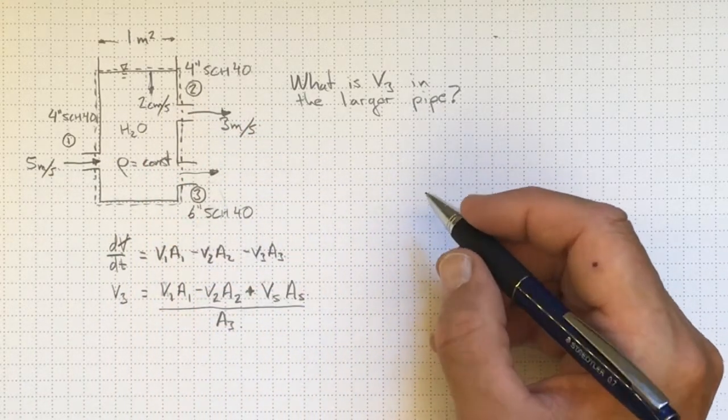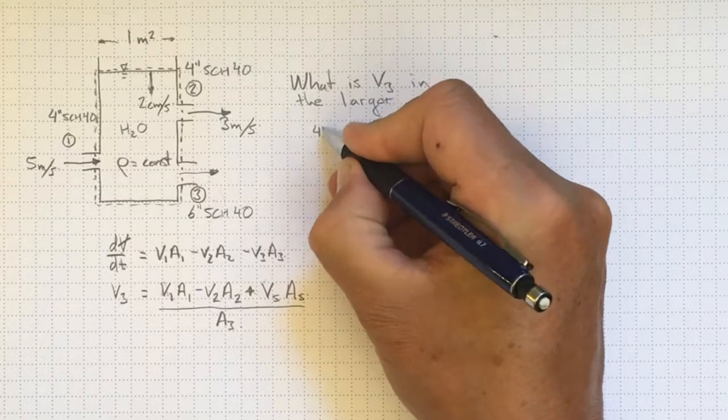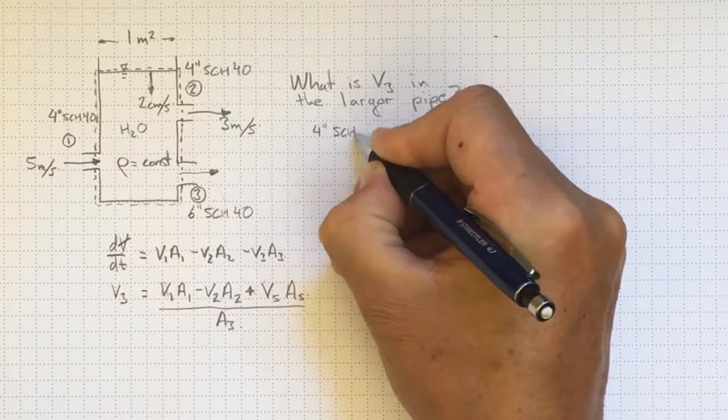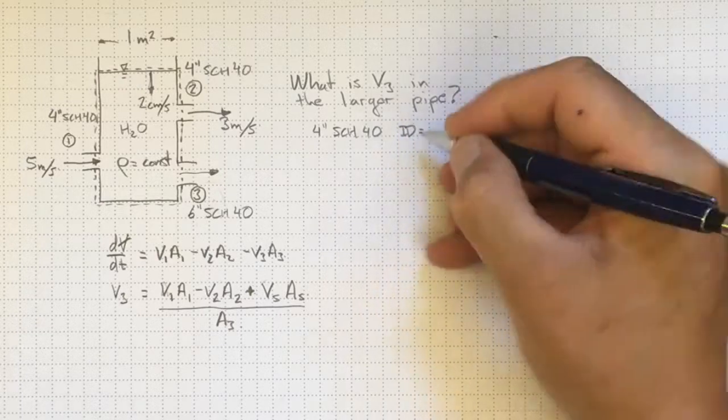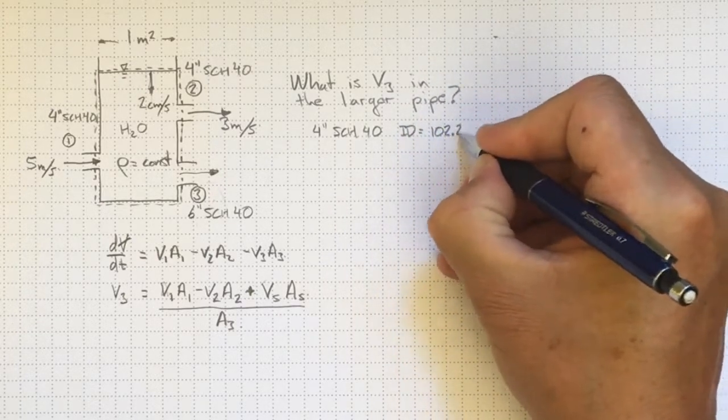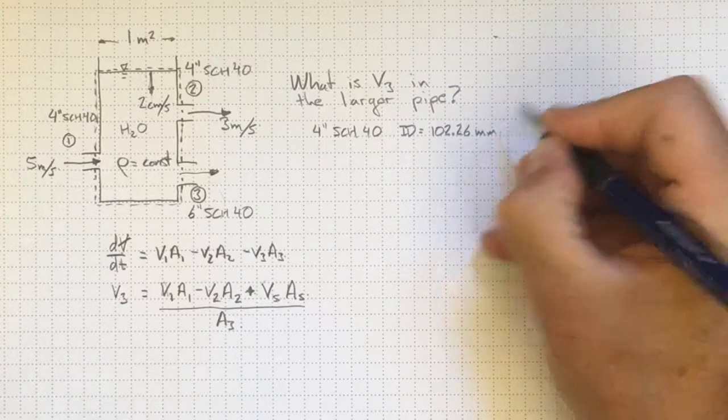So I'd have to go and look up the size of these various pipes. 4 inch schedule 40 pipe has an inside diameter of 102.26 millimeters.